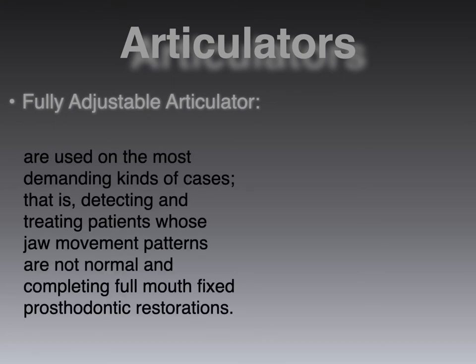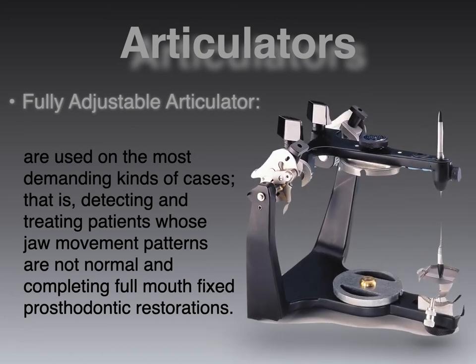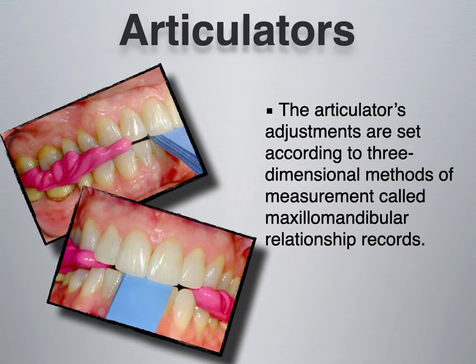Face bows are used for semi-adjustable articulators and also for fully adjustable articulators. Fully adjustable articulators are used on the most demanding types of cases — detecting and treating patients whose jaw movement patterns are not normal, and completing full mouth fixed prosthodontic restorations. The articulator's adjustments are set according to three-dimensional methods of measurement, which are called the maxillomandibular relationship records.